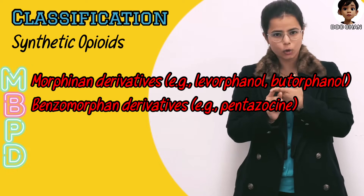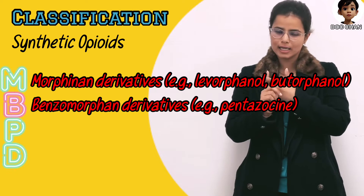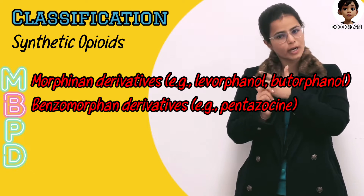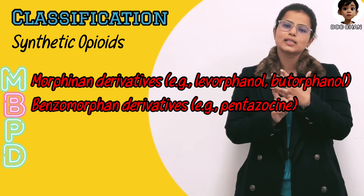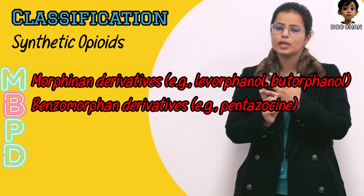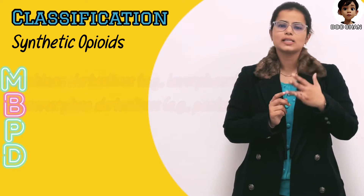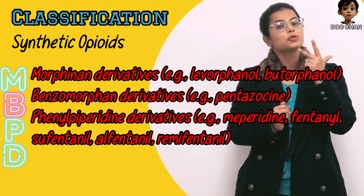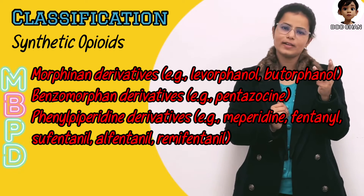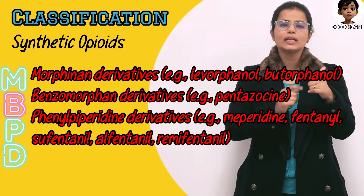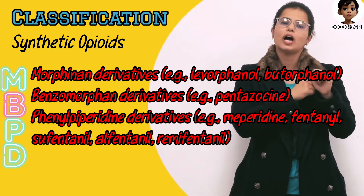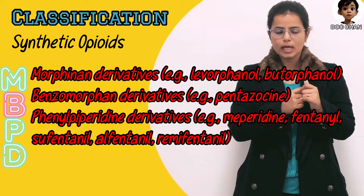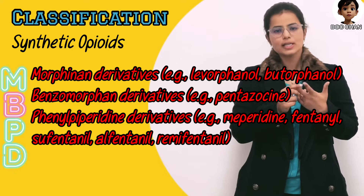Pentazocine acts like pancuronium, that is it causes increased sympathetic activity. It is used in the treatment of pruritus and it increases post-operative nausea and vomiting. Next is phenylpiperidine derivatives: meperidine, fentanyl, sufentanyl, alfentanyl, and remifentanyl. Meperidine has an action on alpha-2 agonist, so it increases heart rate, and fentanyl we all know about.